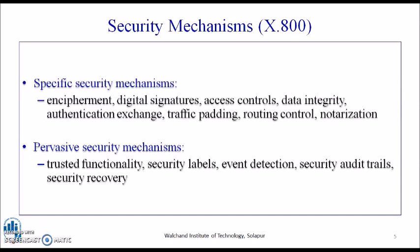Access control refers to a variety of mechanisms that enforce access rights to resources. The administrator has different rights, students have different rights, and general users have different rights. When you try to launch freeware or software that is only valid for a particular period, those embedded mechanisms are called access control. Data integrity refers to a variety of mechanisms used to assure that the integrity of a data unit or stream of data is maintained — that the contents have not been modified over time.